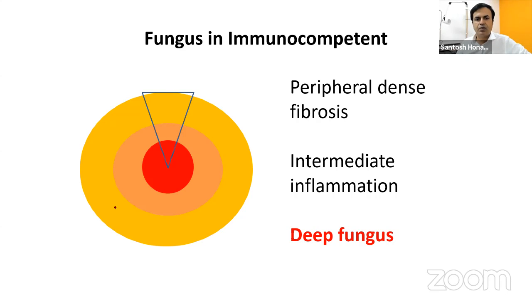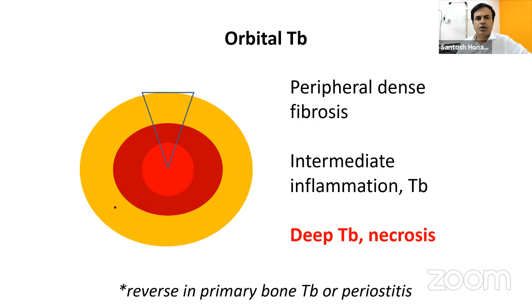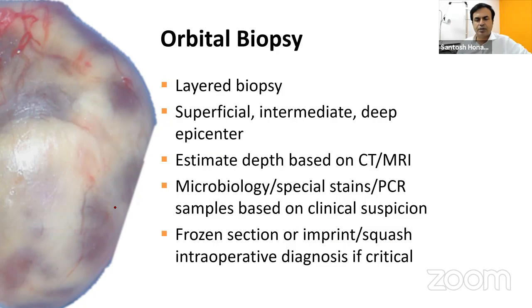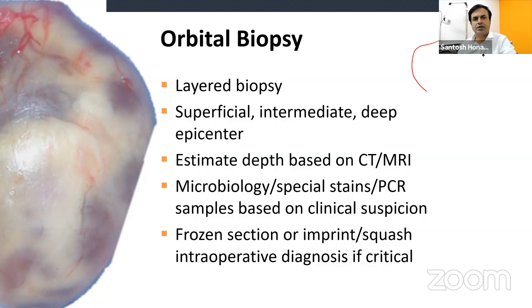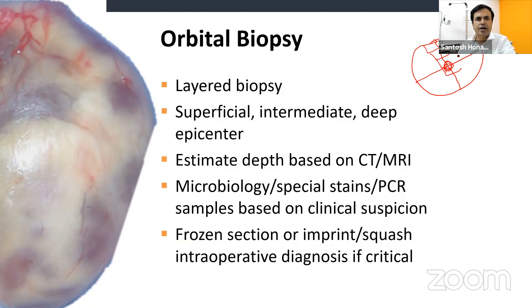Fungus generally doesn't grow from orbital lesions, so pan-fungal PCR may be needed, but special stains are positive from the deep zone. For TB, unless it's a periosteal variant, the deep zone is positive for tubercular pathology. In orbital biopsy, perform a layered biopsy, estimating the epicenter — where the largest horizontal and vertical diameters intersect on imaging — and sample superficially, mid-zonally, and deep, past the epicenter.